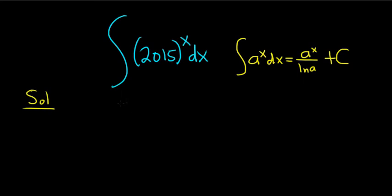I'll write it again down here: the integral of 2015^x dx. Our a here is 2015, so it's simply (2015)^x over the natural log of 2015.